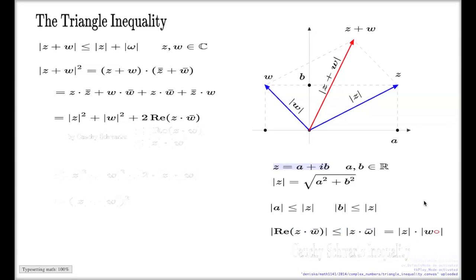And then I end up with something like this. Or, we all know that the absolute value of the product is the product of the absolute values. We also know that the absolute value of the complex conjugate is the same as the absolute value of the number itself.